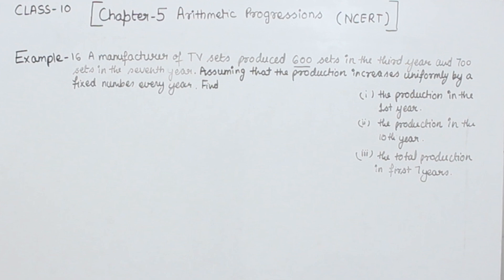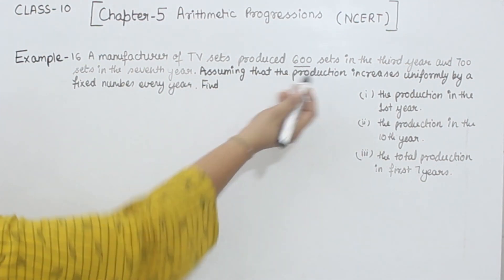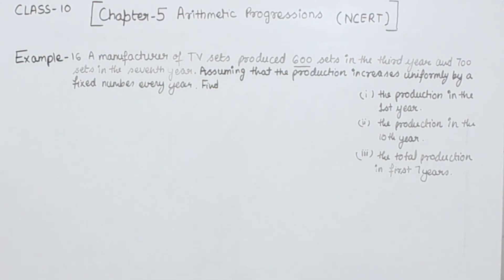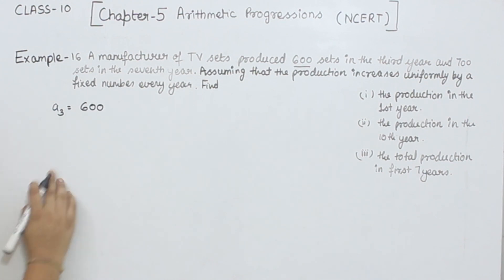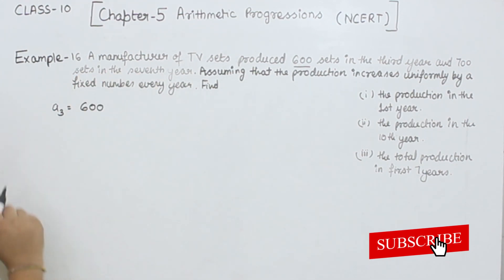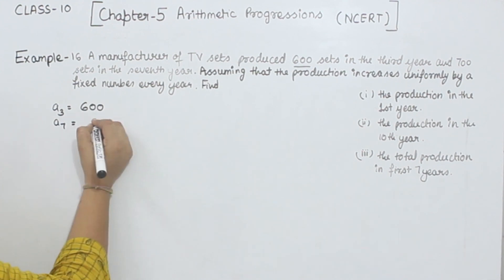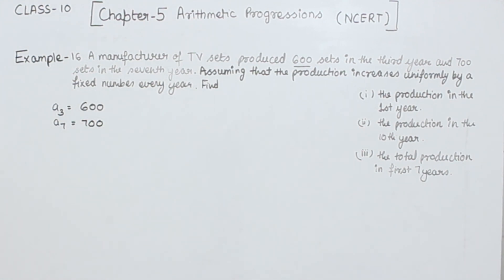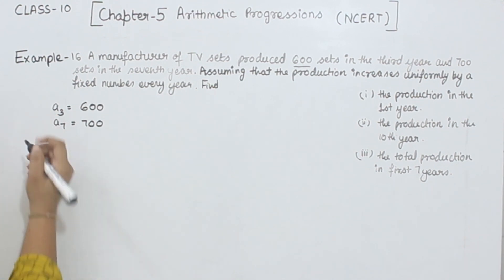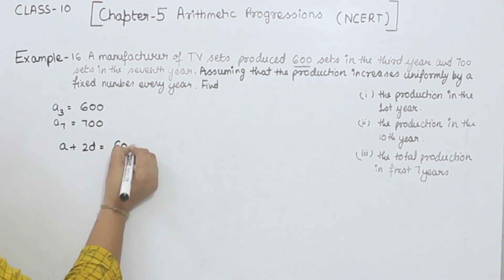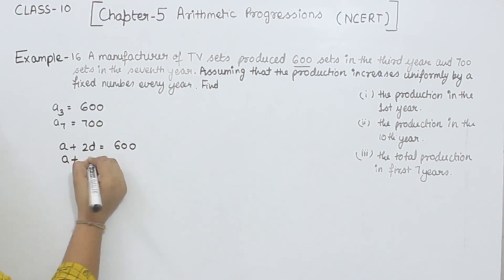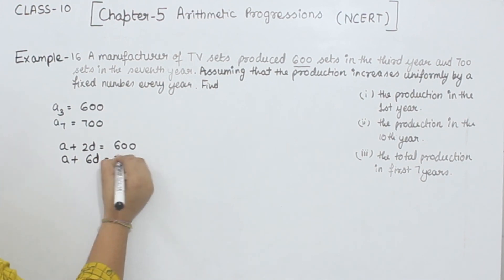We are given that 600 sets were produced in the third year, so a3 = 600. We are given that 700 sets were produced in the seventh year, so a7 = 700. Now, a3 can be written as a + 2d = 600, and a7 as a + 6d = 700.